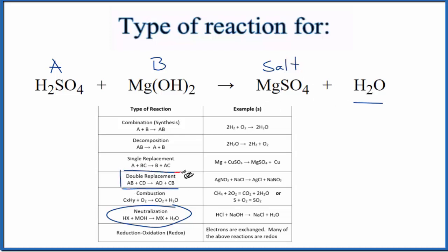But it's also a double replacement reaction. That's because the hydrogen and the magnesium, they trade places. They replace each other. So we have hydrogen is now with the OH, so HOH. That gives us HOH is H2O. And then magnesium goes with the sulfate. We get magnesium sulfate.